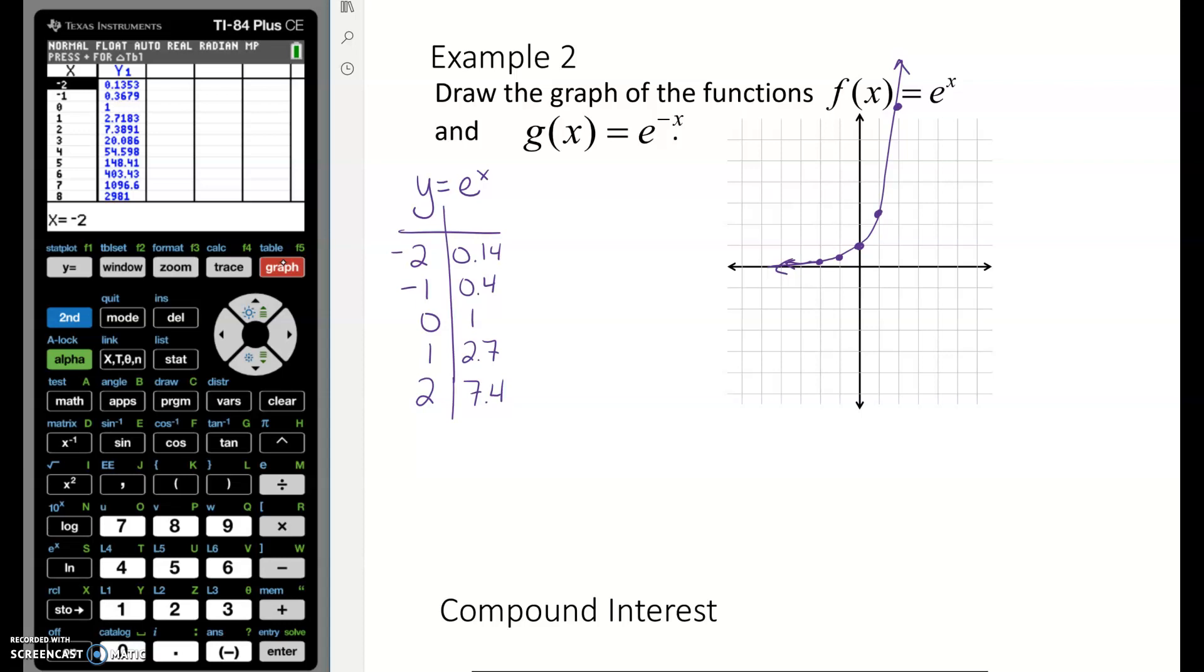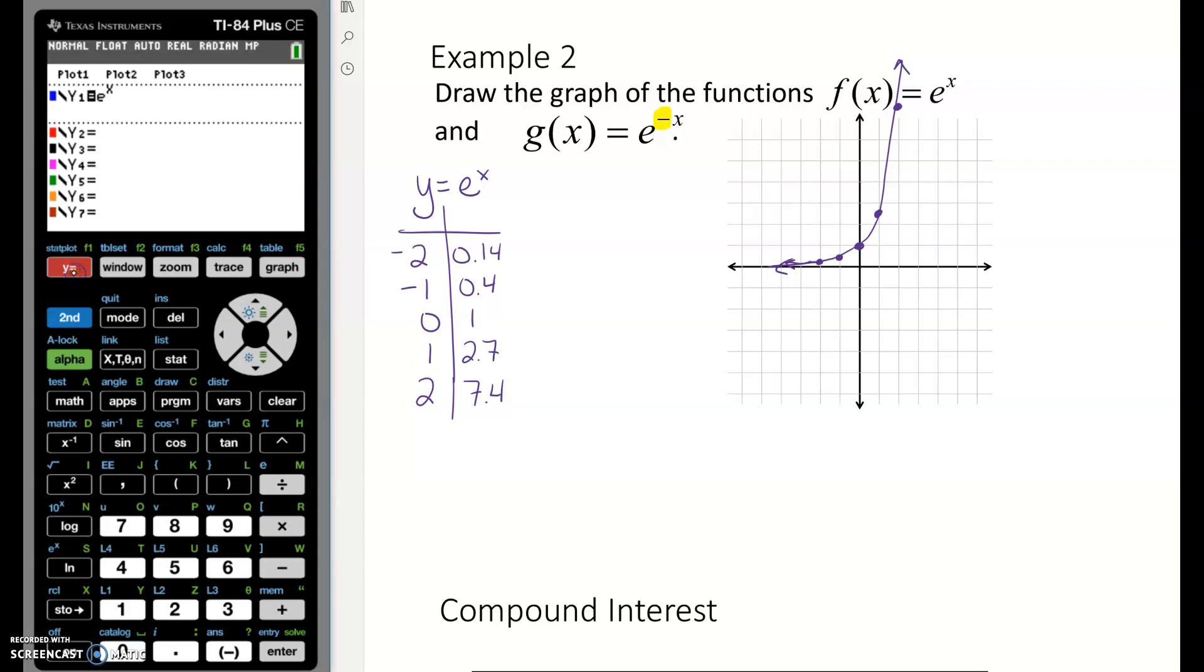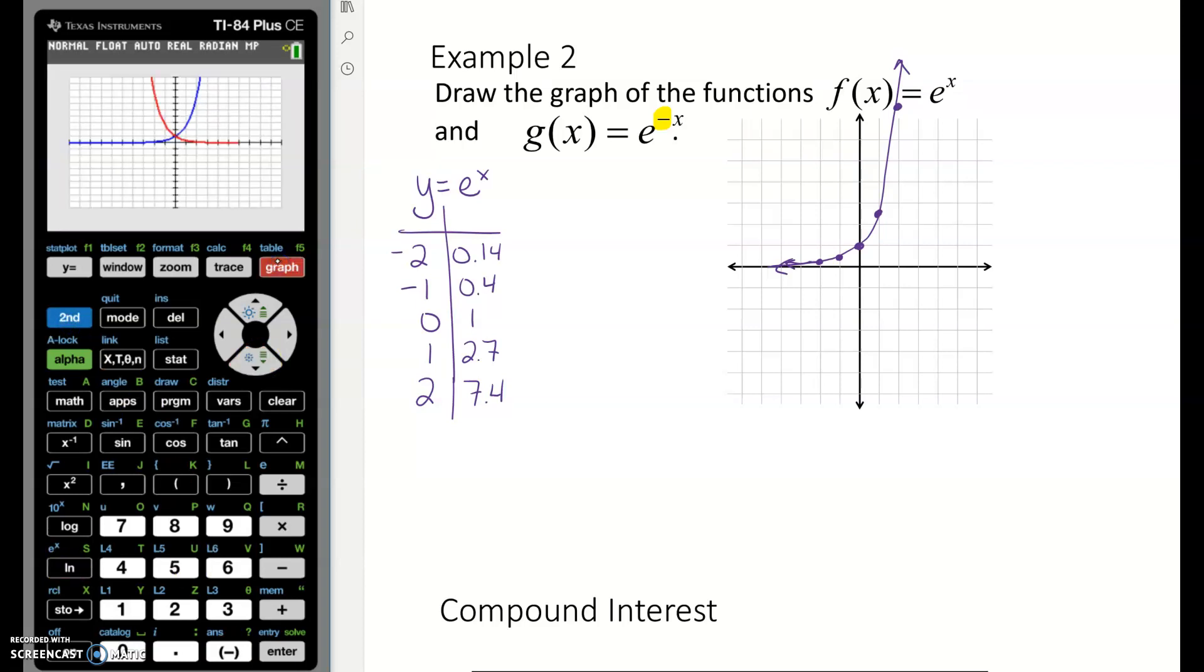We talked yesterday about growth and decay. e is basically 2.72, so this is always going to be a growth function unless there is a negative in the exponent. That negative in the exponent is going to flip that around. So then I will type in e to the negative x and let you see what that graph looks like. See how that red graph is just exactly mirrored? You could even come over here and mirror this if you wanted to. There's e to the negative x.